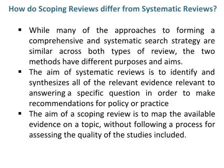How do scoping reviews differ from systematic reviews? While many of the approaches to forming a comprehensive and systematic search strategy are similar across both types of review, the two methods have different purposes and aims. The aim of systematic reviews is to identify and synthesise all of the relevant evidence to answer a specific question in order to make recommendations for policy or practice. The aim of a scoping review is to map the available evidence on a topic without following a process for assessing the quality of the studies included.